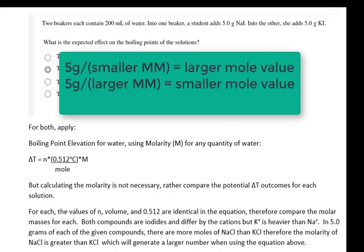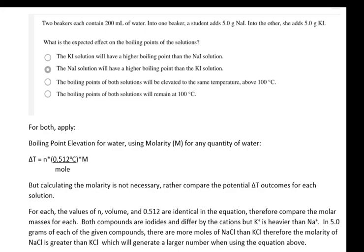5 divided by a smaller number will give a large amount of moles as compared to 5 divided by a larger number, which will give a fewer amount of moles, comparatively speaking. Therefore...